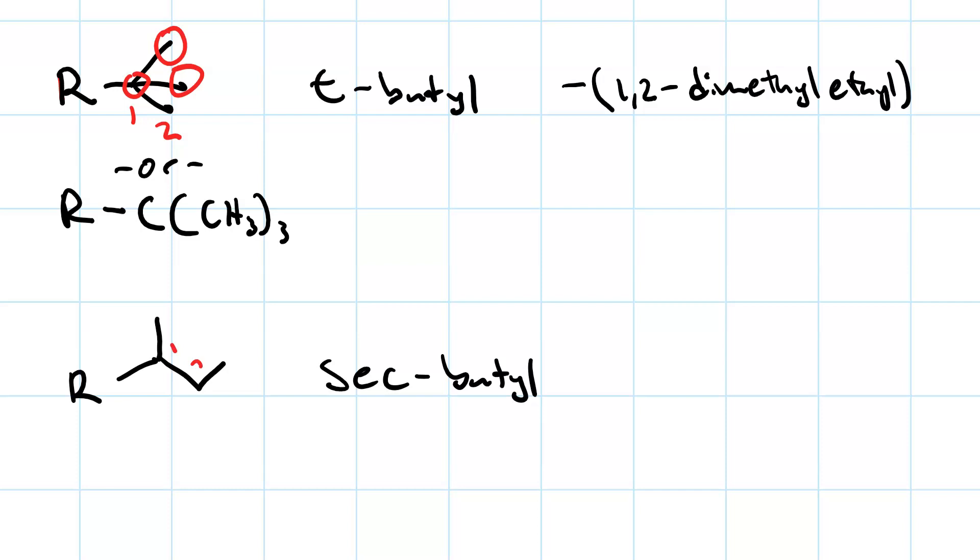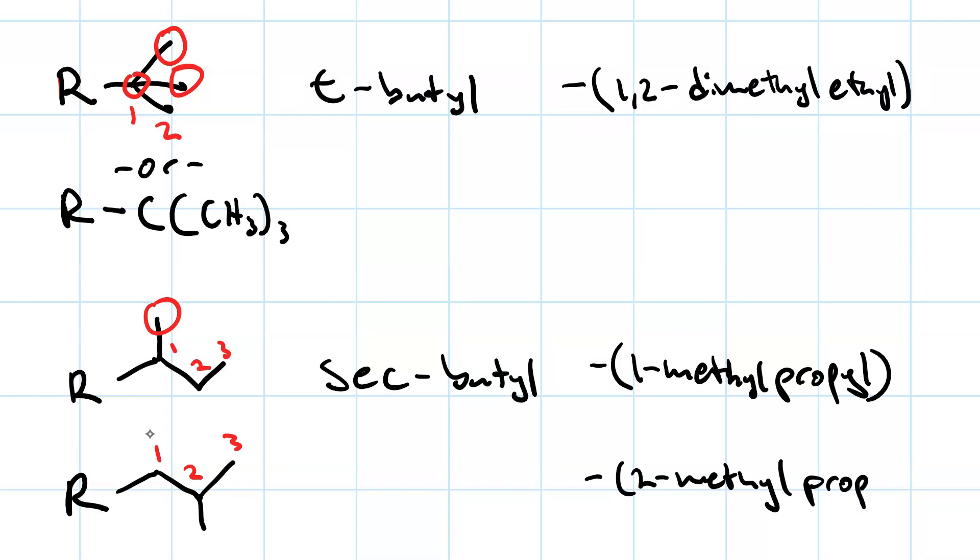Is that the only 4-carbon complex substituent? And no, there's also this one. We call this sec-butyl for secondary butyl. And if we name it systematically, this is carbon one, two, and three with a methyl group on carbon one. So the systematic name is 1-methylpropyl. Again, most people use the common name, sec-butyl. If we move the methyl group from carbon one of the substituent to carbon two of the substituent, then the systematic name would be 2-methylpropyl. And the common name is isobutyl.